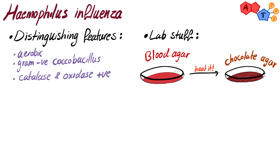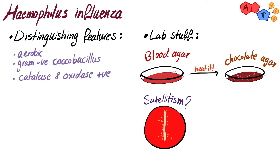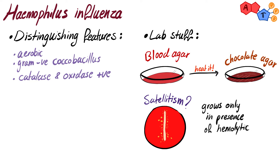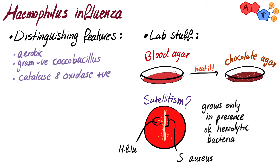Also, Haemophilus influenzae may demonstrate satellitism in culture. This means it can grow on blood agar only in the presence of hemolytic bacteria such as Staphylococcus aureus. You can see how the colonies of H. flu surround Staphylococcus aureus like a satellite.